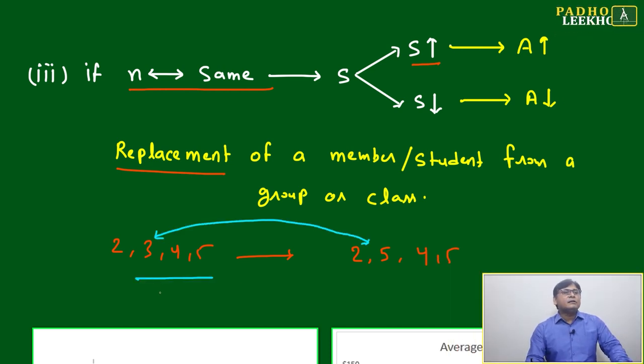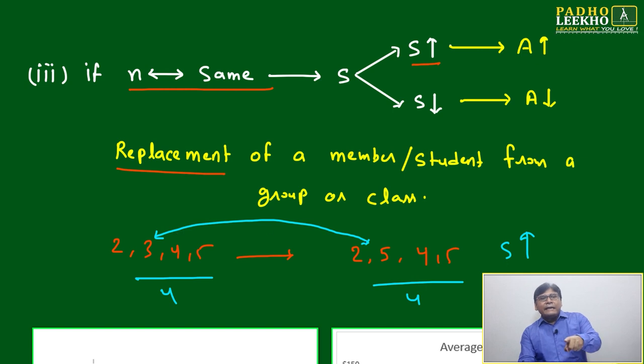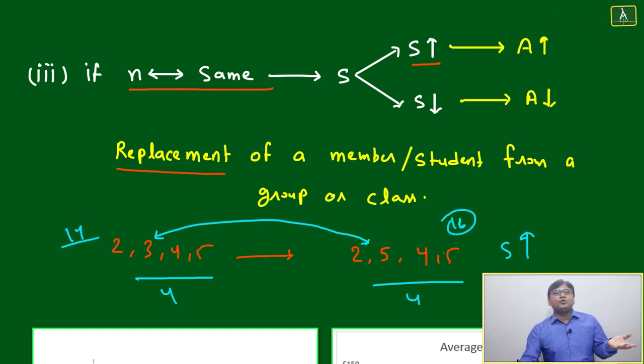Then n is here also four, here also four. But what has happened? S has increased because whatever data you put is higher than the earlier value. It was three, you replaced it with five, so sum will increase. Here sum will become 16, two is extra. If sum is increasing, then average will increase.